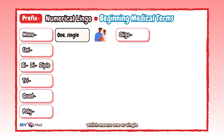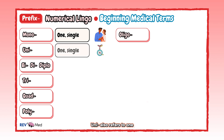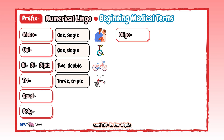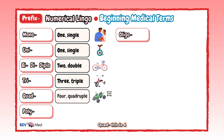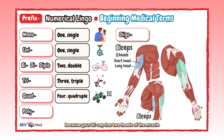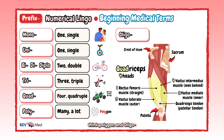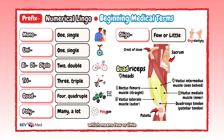Let's begin with commonly used prefixes, starting with numerical prefixes. Mono means one or single — think monogamous, married to one person. Uni also refers to one — think unicycle. Bi, di, or diplo refers to two or double — think bicycle. Tri is triple — think tricycle. Quad means four — think quadrant. Think about muscles: your bicep has two heads, your tricep has three, and the quadriceps has four parts.